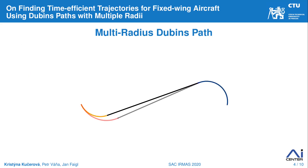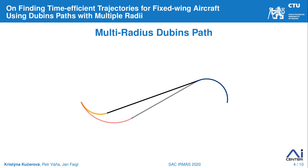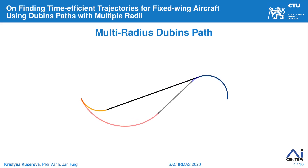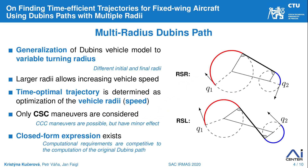To be able to decrease the travel time, we propose to enlarge the turning radii and thus introduce the multi-radius Dubins path. This modification increases the speed on the curve; however, a larger radius also increases the total length of the path. We need to find the trade-off between increasing the speed and increasing trajectory length to minimize travel time. We focus on maneuvers with a straight segment in the middle, because CCC maneuvers are used in a minority of cases when configurations are close together. A closed-form expression exists for the multi-radius path and the computation time is competitive to the original Dubins path.